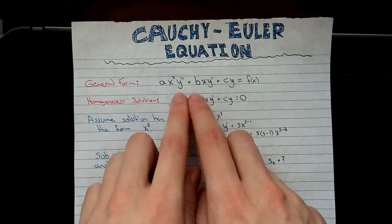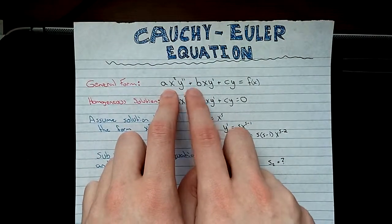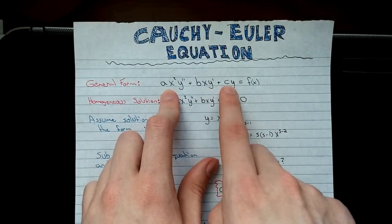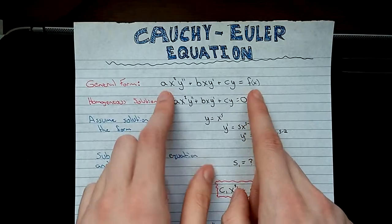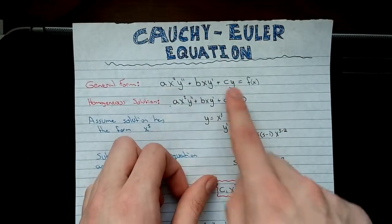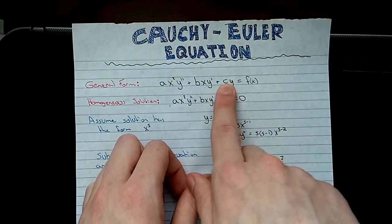You're going to look for the general form right here: ax squared y double prime plus bxy prime plus cy equals f of x. Key thing to keep your eye out for is it looks like a polynomial. You have x squared, x, and then some constant.